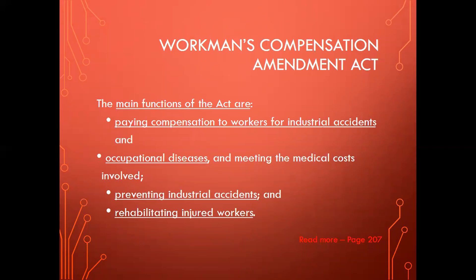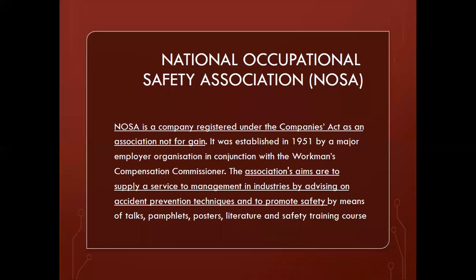There is also the Workman's Compensation Amendment Act. The main function of this act is paying compensation to workers for industrial accidents, occupational diseases, preventing industrial accidents, and rehabilitating injured workers. You can read more of this act on page 207. Then we have the National Occupational Safety Association, or NOSA. A lot of people will at some point consider doing a health and safety certificate through NOSA. They cover everything related to health and safety, firefighting, and all health-related matters on a site.